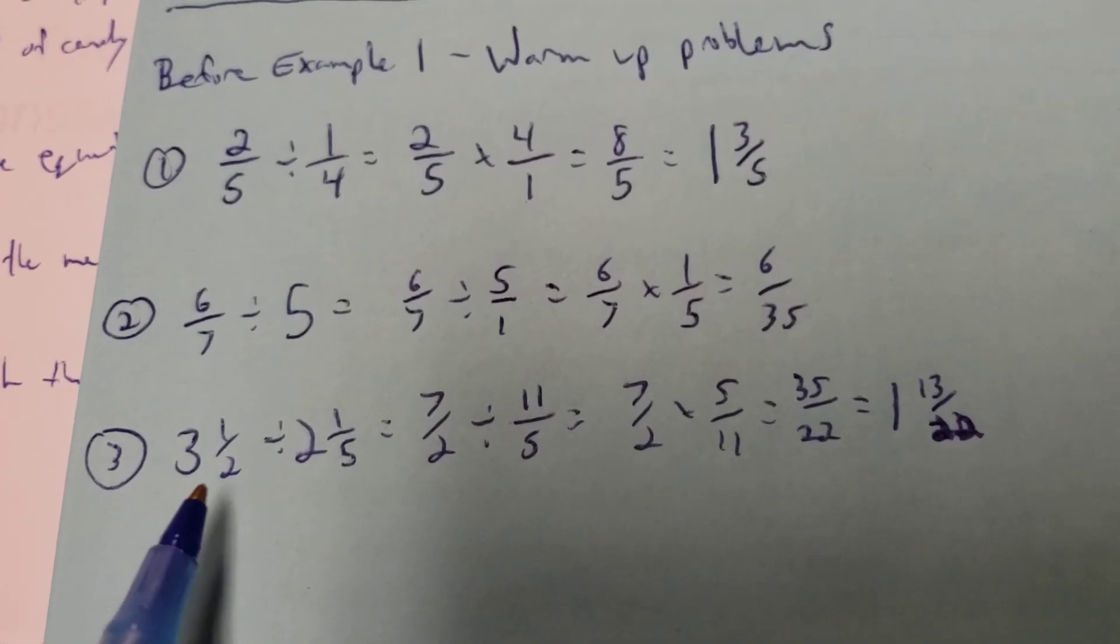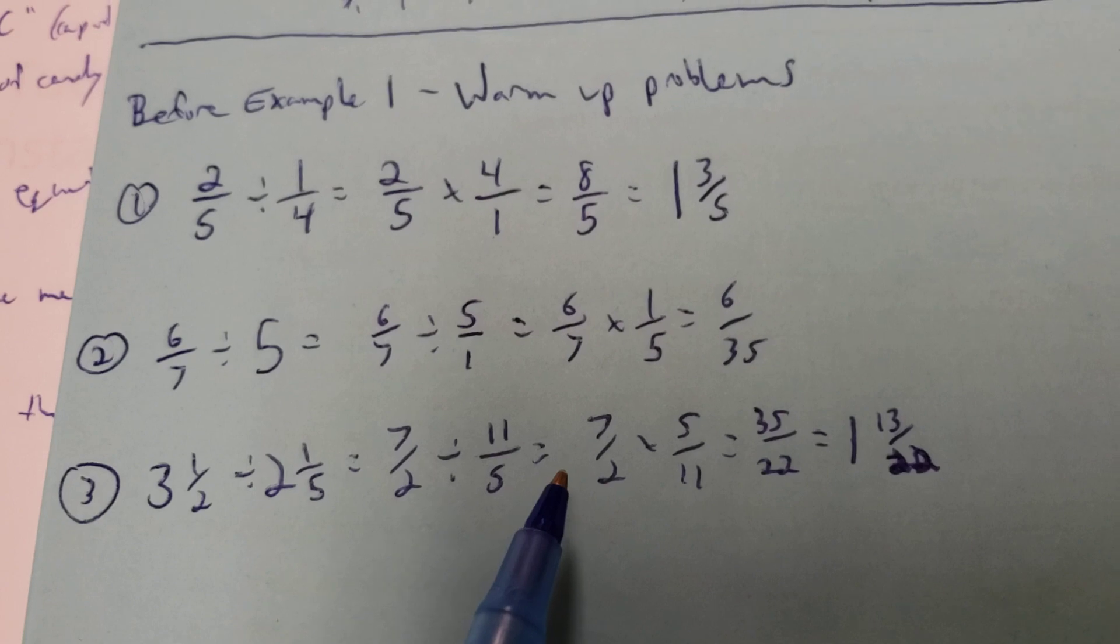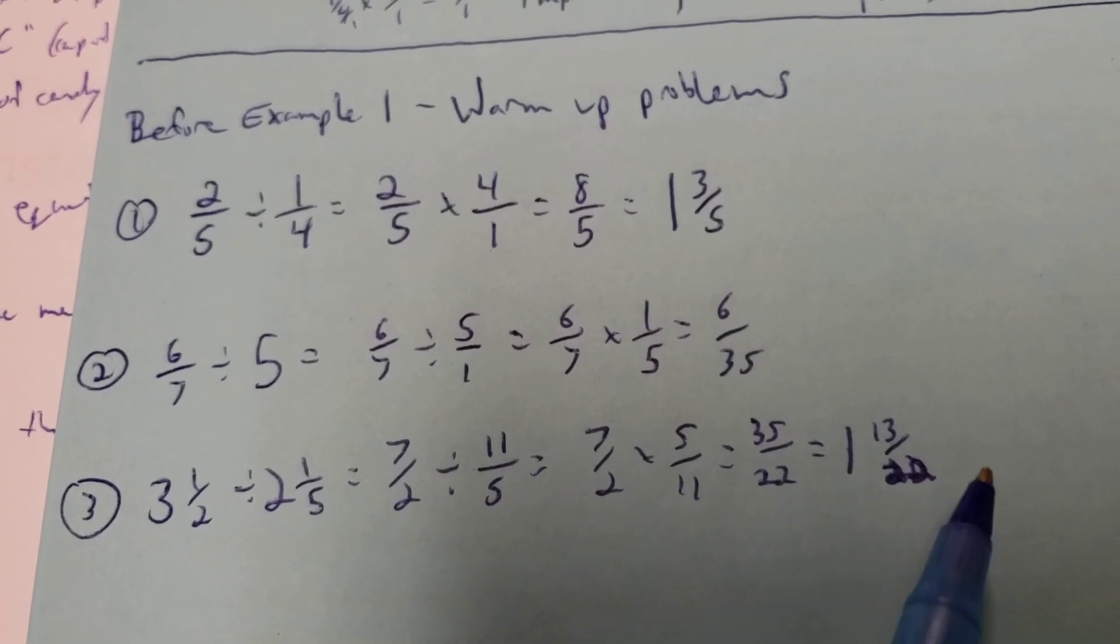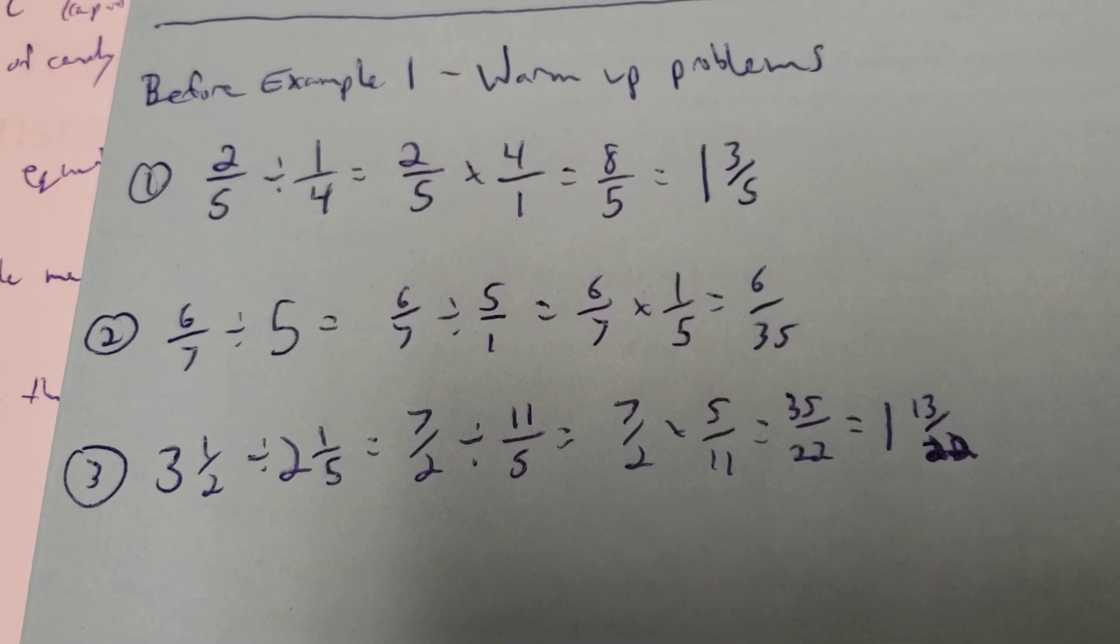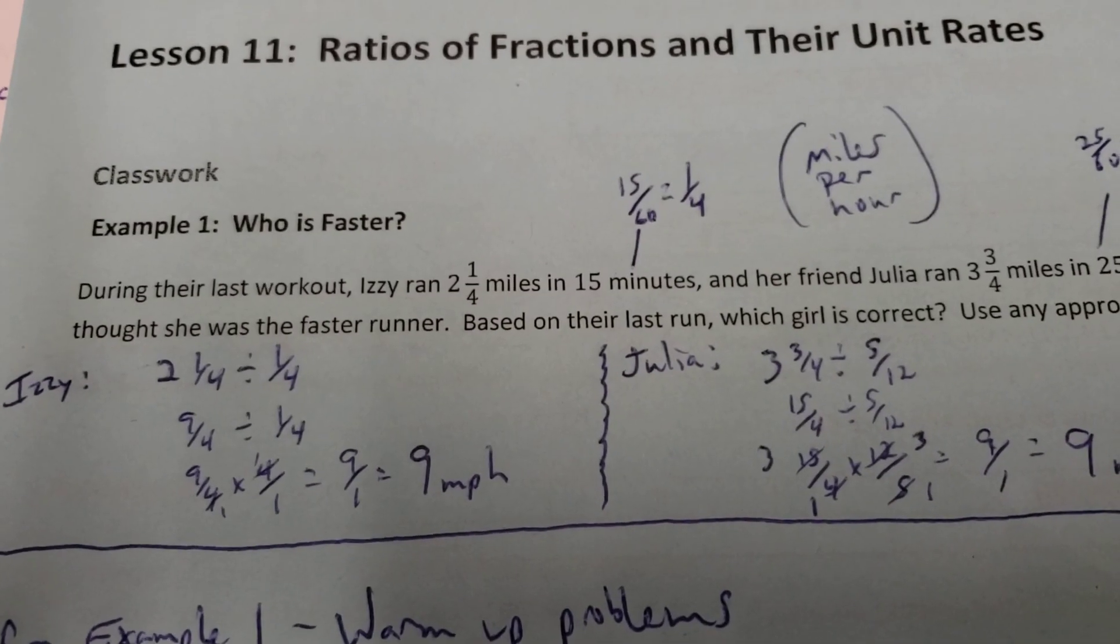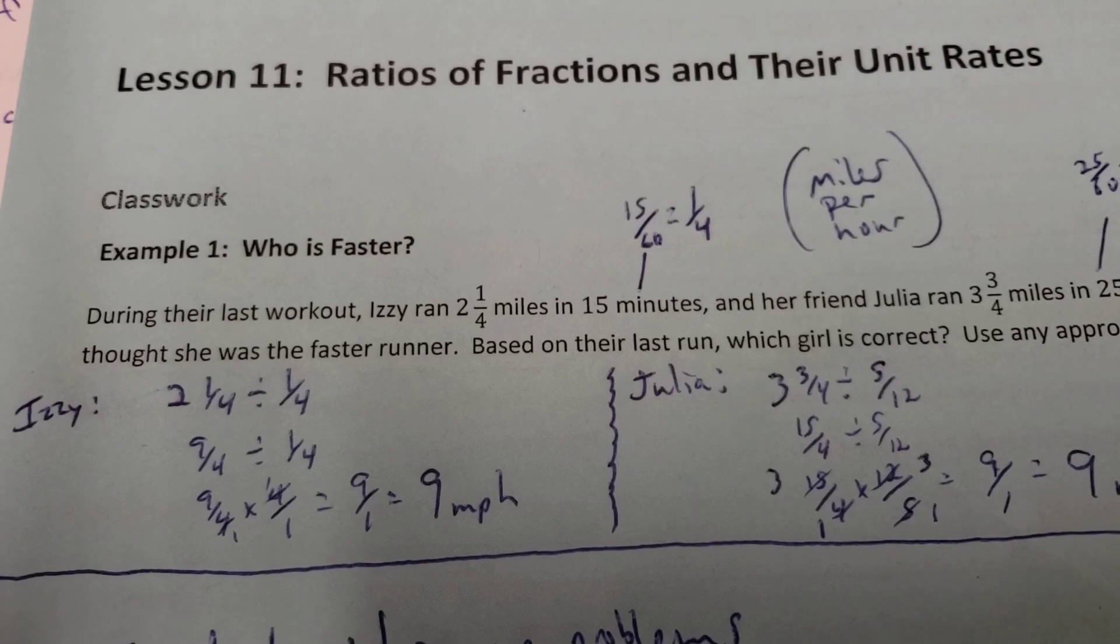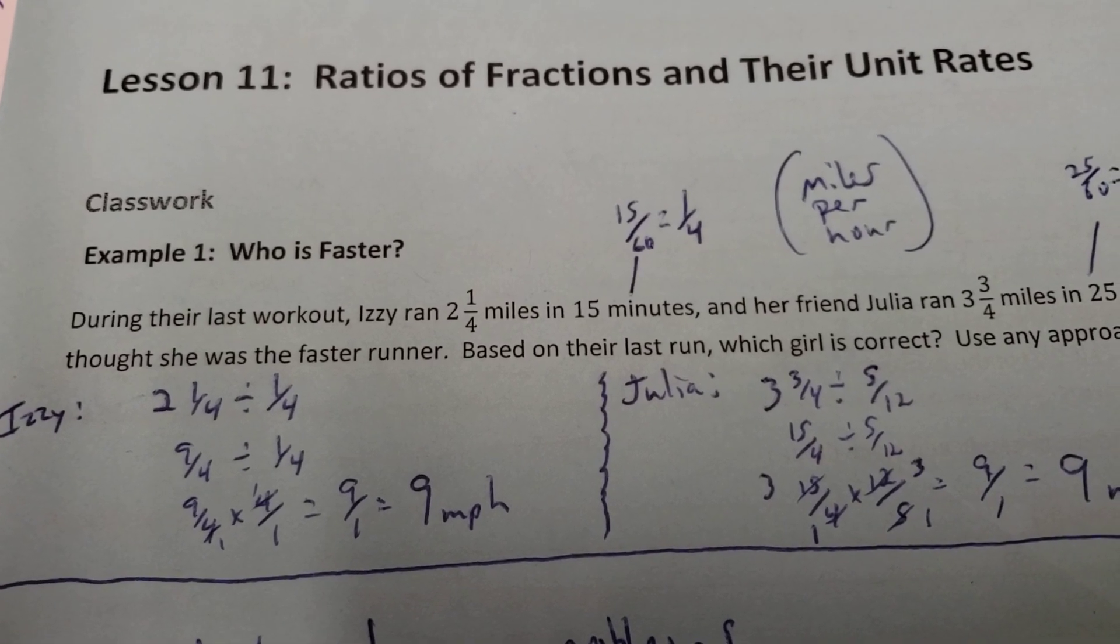If you have mixed numbers, make them both improper first, then you can keep, change, flip, and then convert if necessary. All right? So just a couple examples of how we do those. So let's take a look at example one here. It says, example one, who is faster?